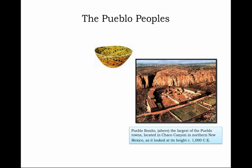What you see is a picture of the Spanish-named Pueblo Bonito, the largest of the Pueblo towns, located in the Chaco Canyon region of northern New Mexico, as it might have looked at its height around the year 1000 CE — roughly 500 years before the arrival of Columbus to the Western Hemisphere. It is a digital recreation based on the ruins of Pueblo Bonito, giving us some idea of the complexity and sophistication of the civilization created in the Four Corners region centuries before European arrival.